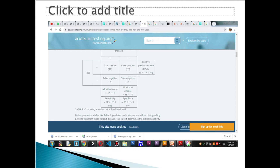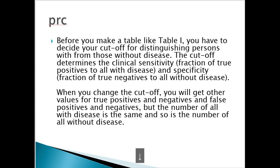Before you make a table comparing method with clinical truth, you have to decide your cutoff for distinguishing persons with from those without disease. The cutoff determines the clinical sensitivity — fraction of true positives to all with the disease — and specificity — fraction of true negatives to all without disease (good prognosis). When you change the cutoff, you get other values for true positives, negatives, and false positives and negatives, but the total number with and without disease remains the same.